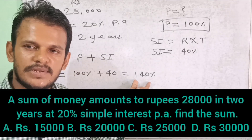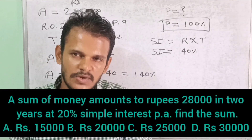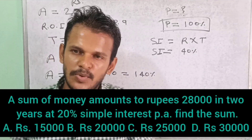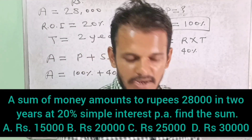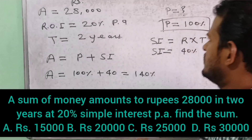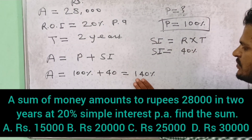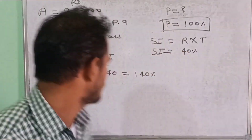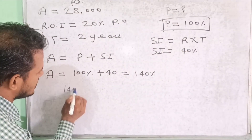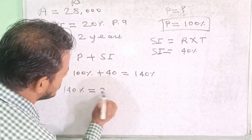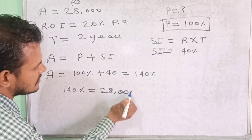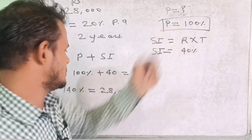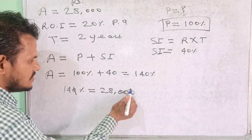Total amount is 140% and the total amount in rupees is Rs. 28,000. So we can say: 140% is equal to Rs. 28,000. Our target is to find what is the 100%.